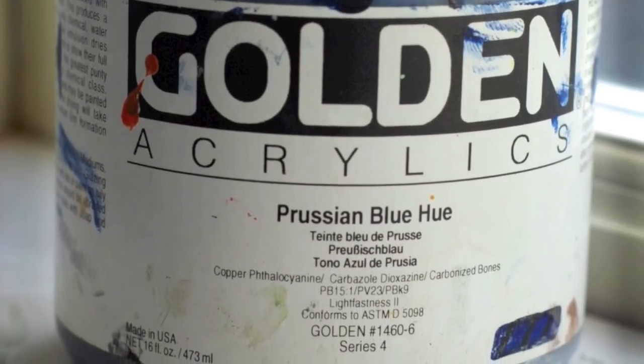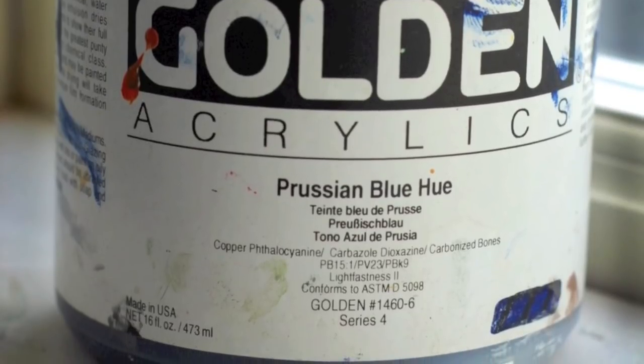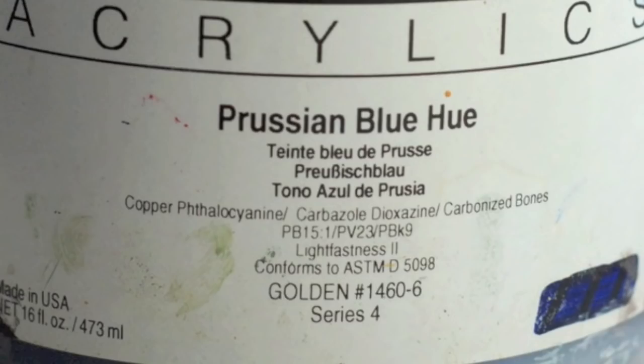If you look on the label of the color, you can see that there. On here it says it has got carbonized bones in it. And the real thing to look out for is PB. If anything says PB, it means it has got the pigment of black in the paint.